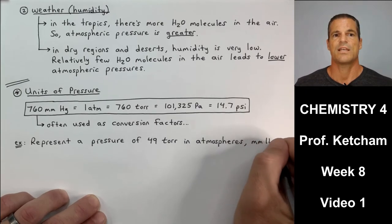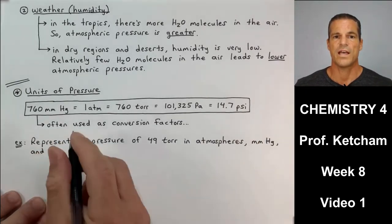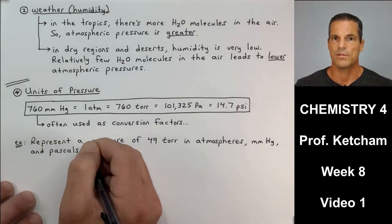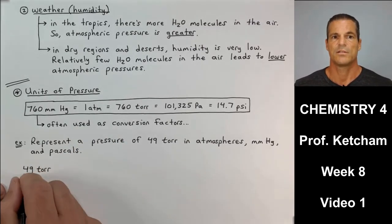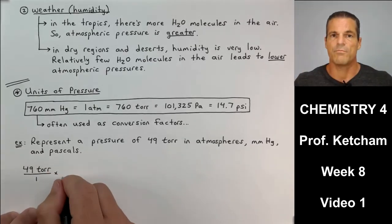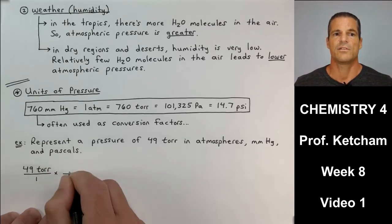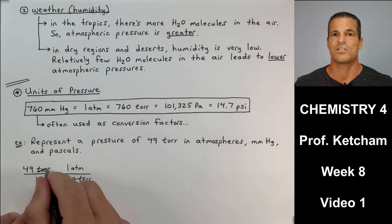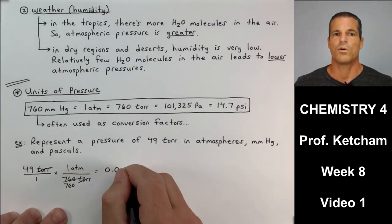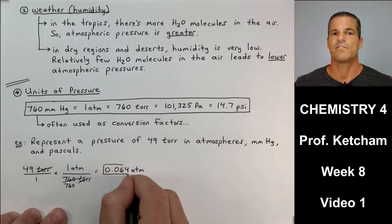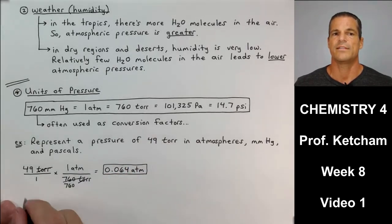The example says, represent a pressure of 49 torr in atmospheres, in millimeters mercury, and in pascals. So, start with what you're given, put it over one, like we learned in dimensional analysis in sections two and three. So, for every 760 torr, there's one atm, two sig figs, my answer is 0.064 atm.